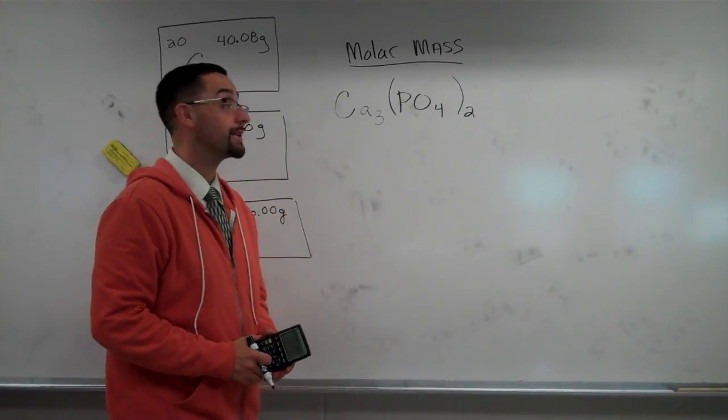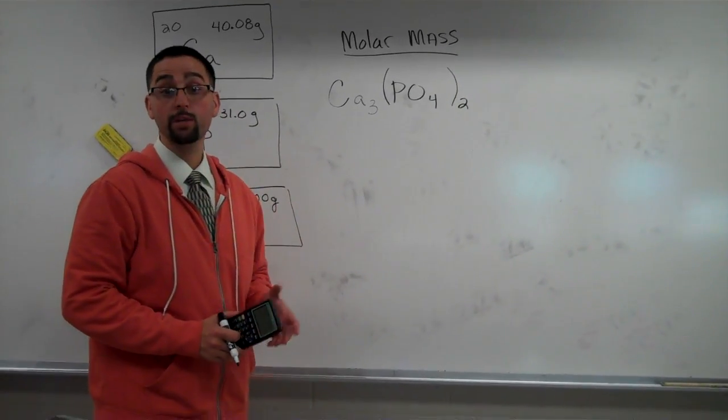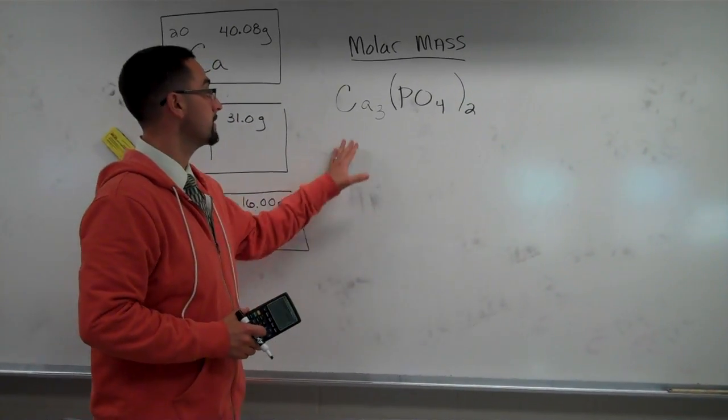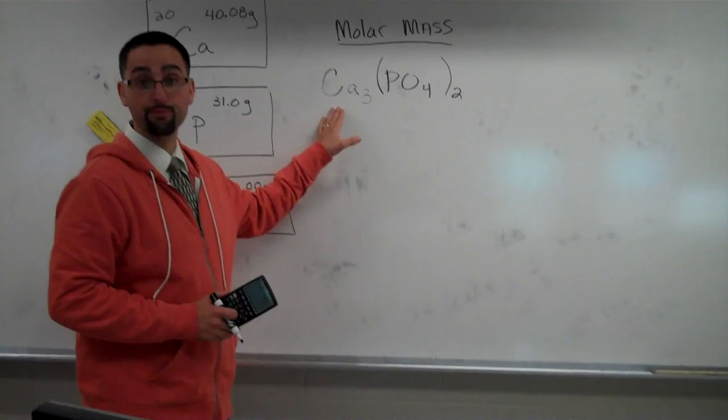Alright, today in chemistry we're going to talk about how to calculate molar mass, how many grams per one mole is in a substance. So what we're going to do first, use an example, this is calcium phosphate.